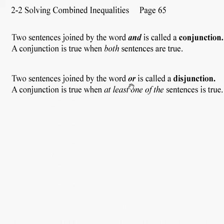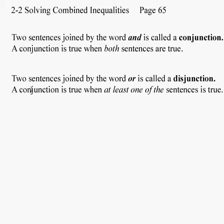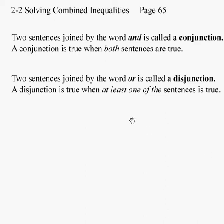In English, we also have sentences joined by the word 'or.' If I go home tonight and my wife asks me what I'd like for supper and I say I'd like steak or pizza — she's not going to make a steak, cut it up, and put it on top of a pizza. That would be 'and.' Either one is okay. In math, we call it a disjunction. A disjunction is true when at least one of the sentences is true. So for the conjunction, both sentences have to be true. For the disjunction, one of them has to be true.